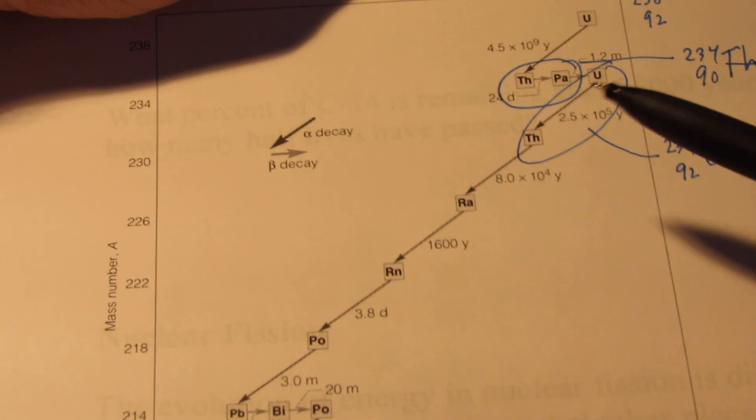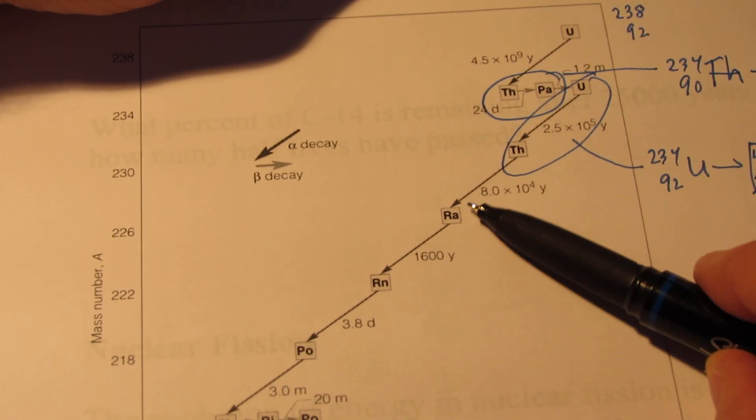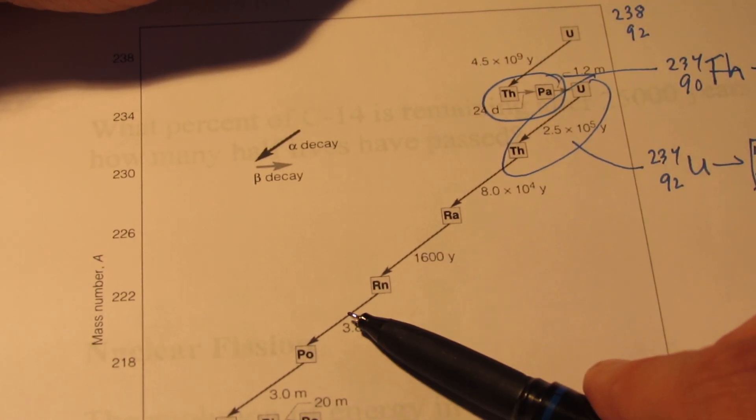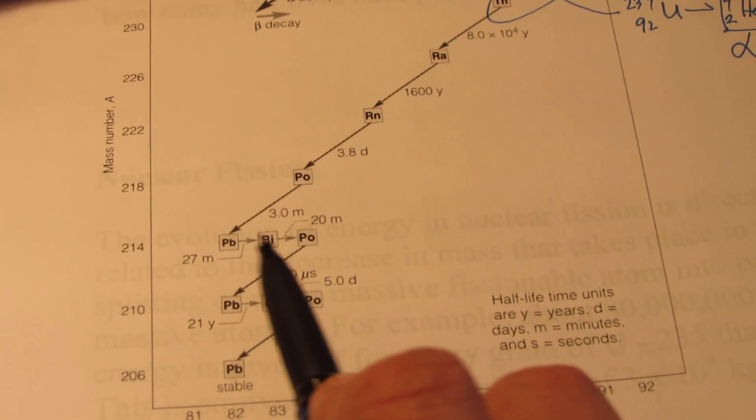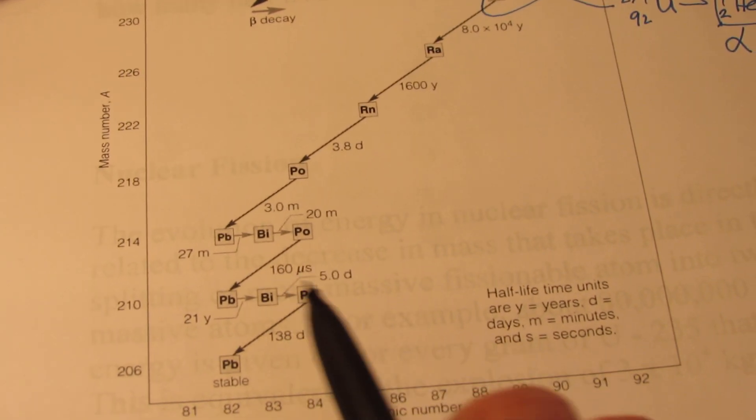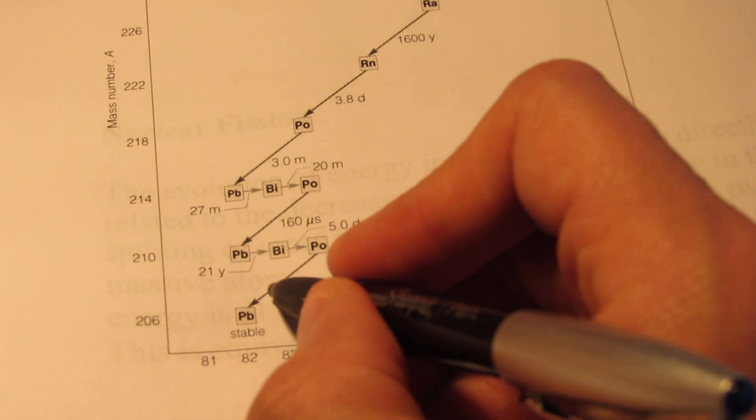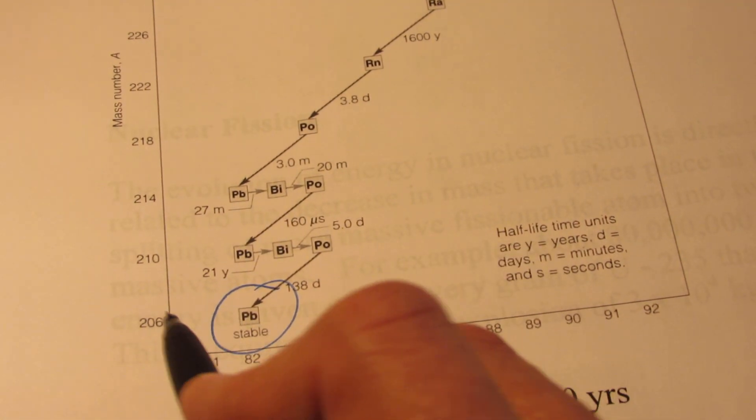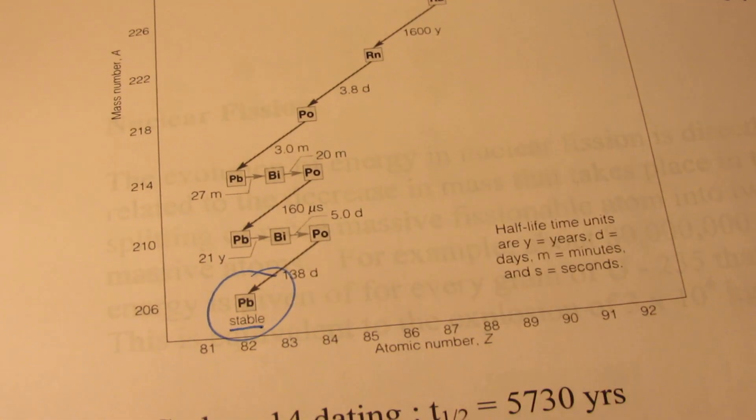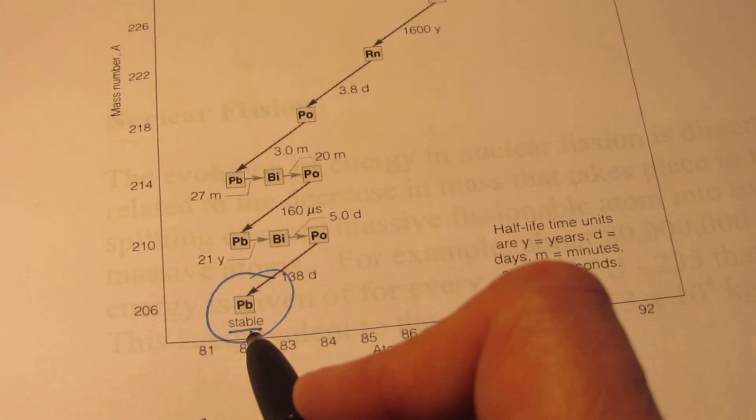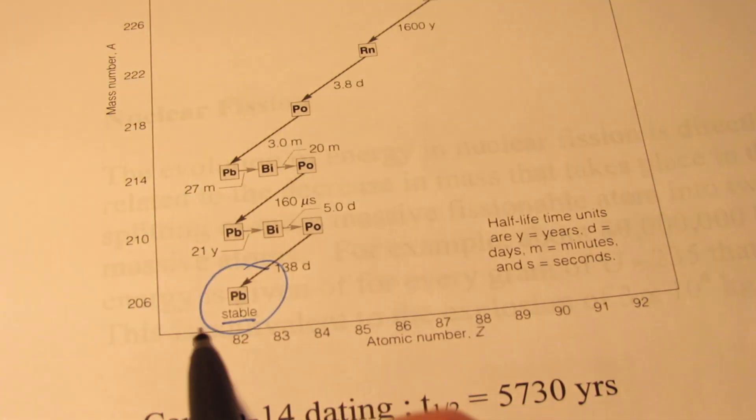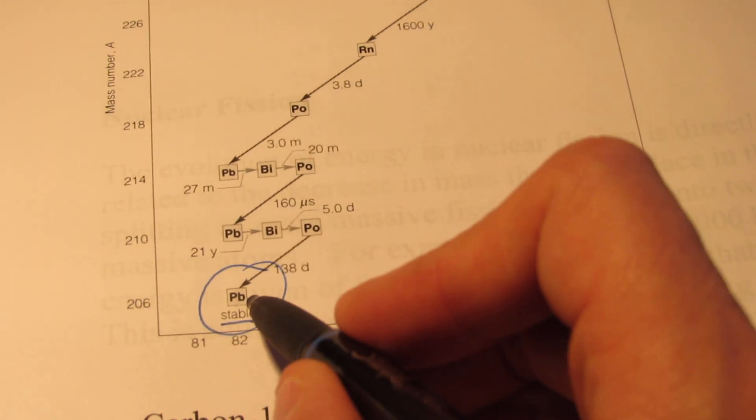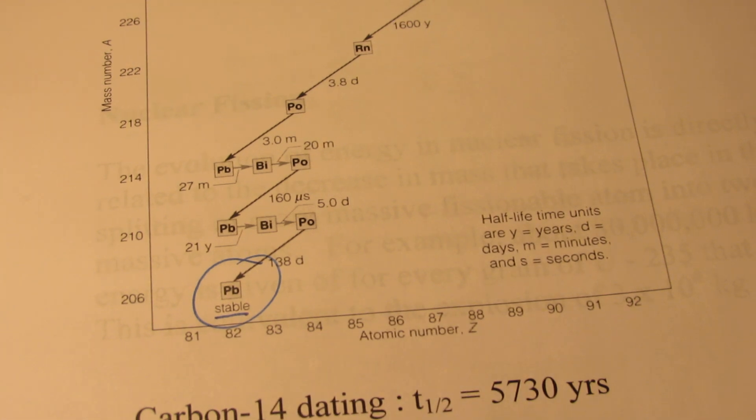So uranium-234 transmutates into thorium-230 by giving off an alpha particle. If you take a look at this graph, every time we have one of these diagonal arrows, it's an alpha emission. Every time it's a horizontal arrow, it's a beta emission. Eventually we get down to lead-206, which is stable, which means we finally have a nucleus that's stable. It's not going to be emitting any alpha or beta particles any longer. It will remain there.